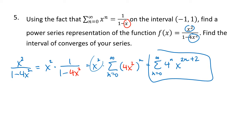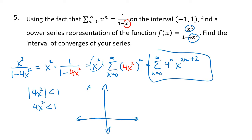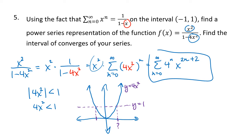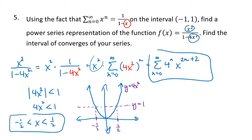For the interval of convergence, the substituted value 4x² must have absolute value less than 1. Since 4x² is non-negative, that's just 4x² < 1. Using a graphical argument: y = 4x² is a parabola, and we want to know when it's less than y = 1. Setting 4x² = 1, the intersection points are x = ±1/2. So the interval of convergence is -1/2 < x < 1/2. That's our formula and our interval of convergence.